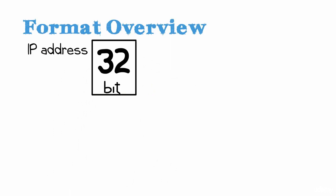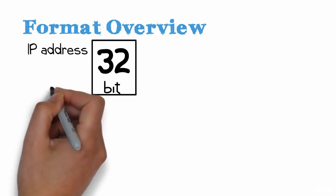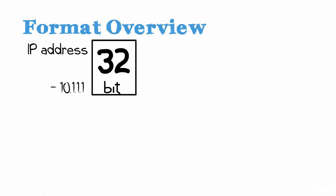So let's look at the format of an IP version 4 address. An IP version 4 address is 32 bits in size, normally written in dotted decimal notation, such as this example, 10.1.1.1. Each value, such as 10, is 8 bits in size.